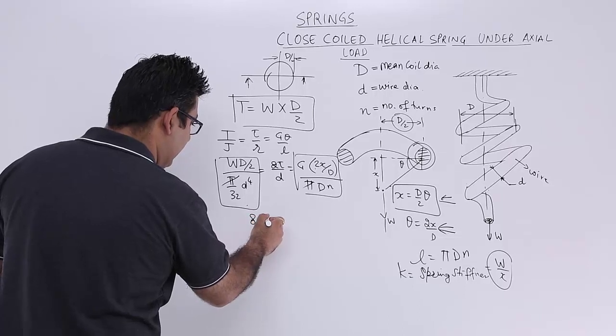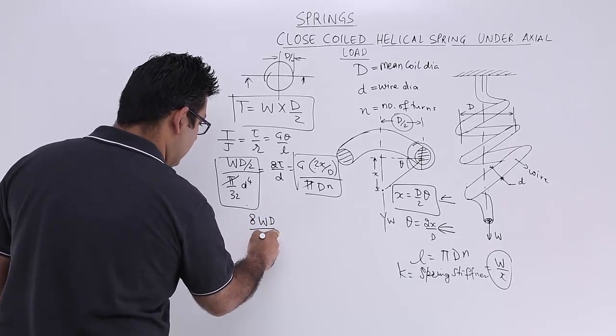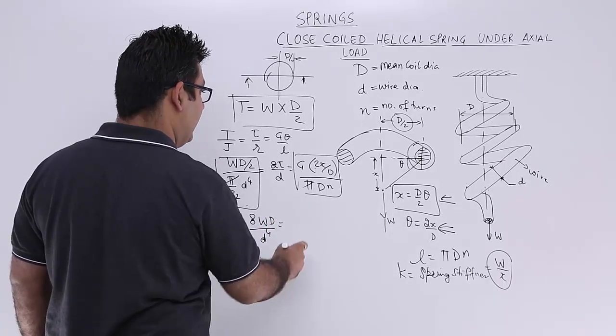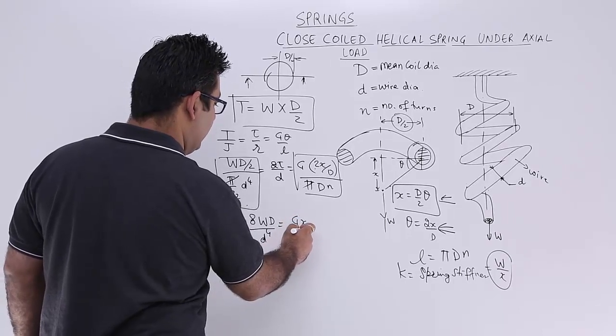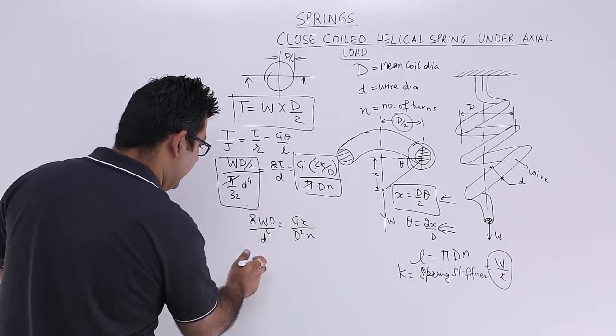So you will get 8 W capital D upon d to the power 4 is equal to G into X upon D square N. So from here let me just get the value of W by X.